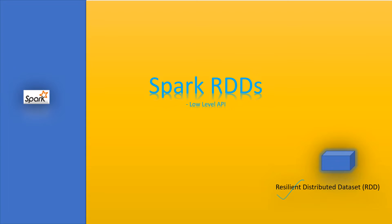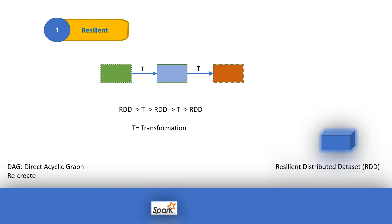We need to understand RDDs in detail. Keep in mind that even when you use the high-level API, internally they are converted into RDDs. Now let's look at the first feature: resiliency. If you perform a transformation or action on an RDD, it will create another RDD. So from one RDD, a transformation creates a new RDD, and another transformation creates yet another new RDD.